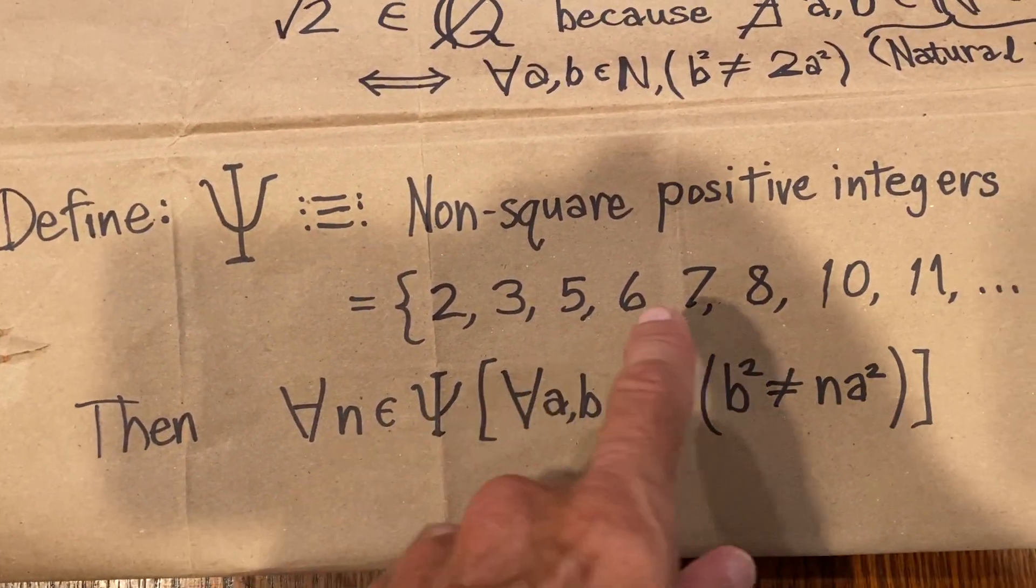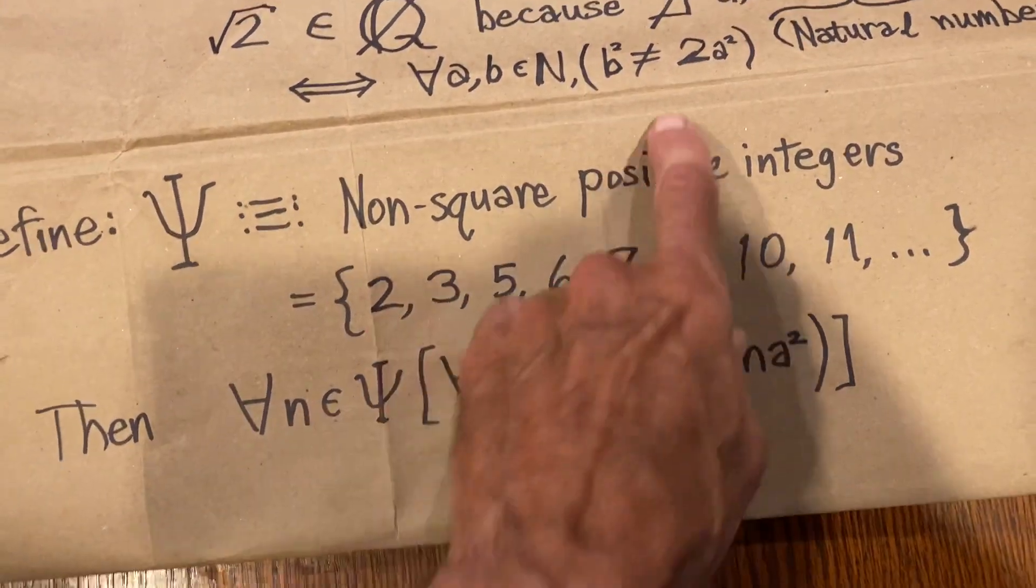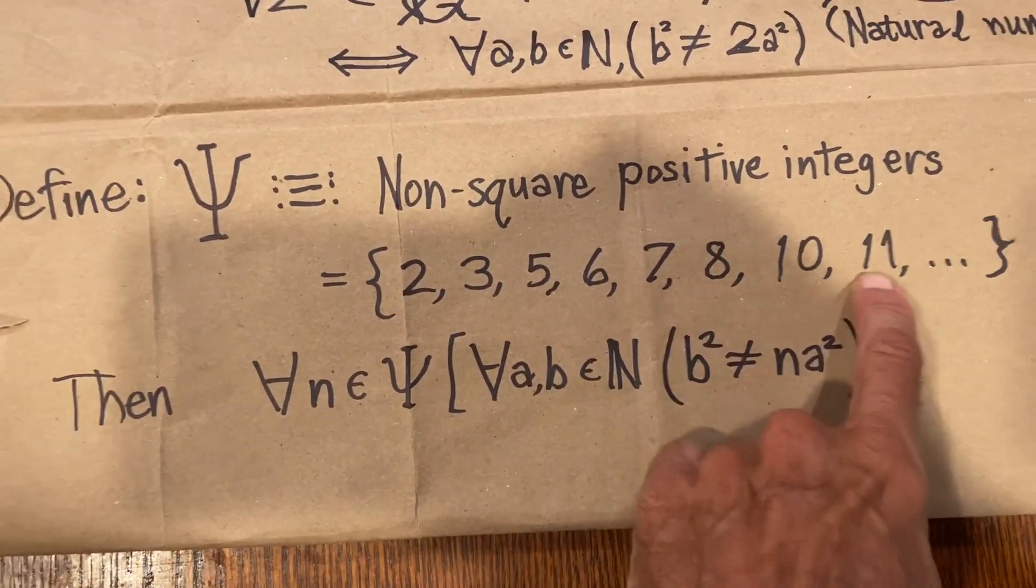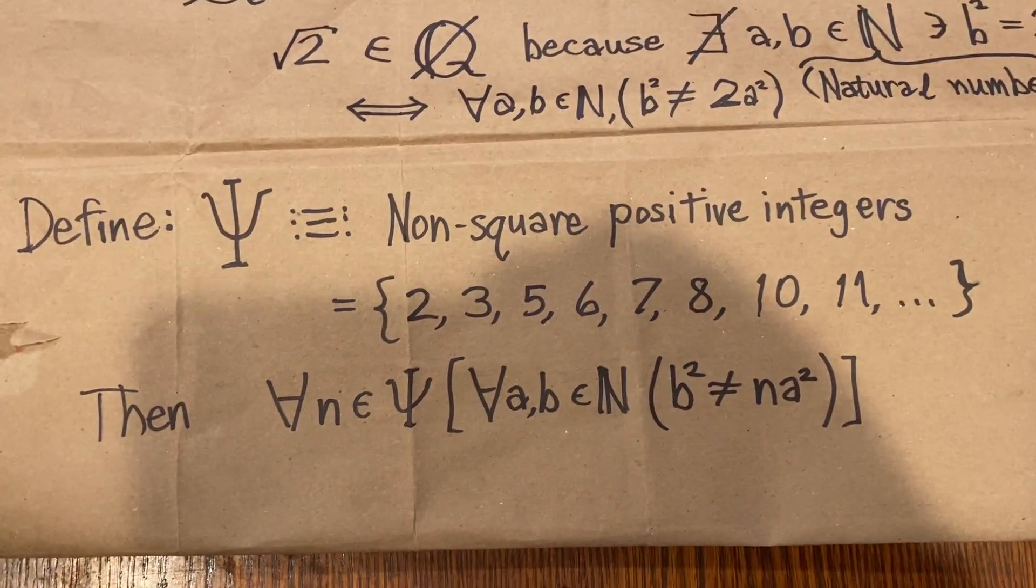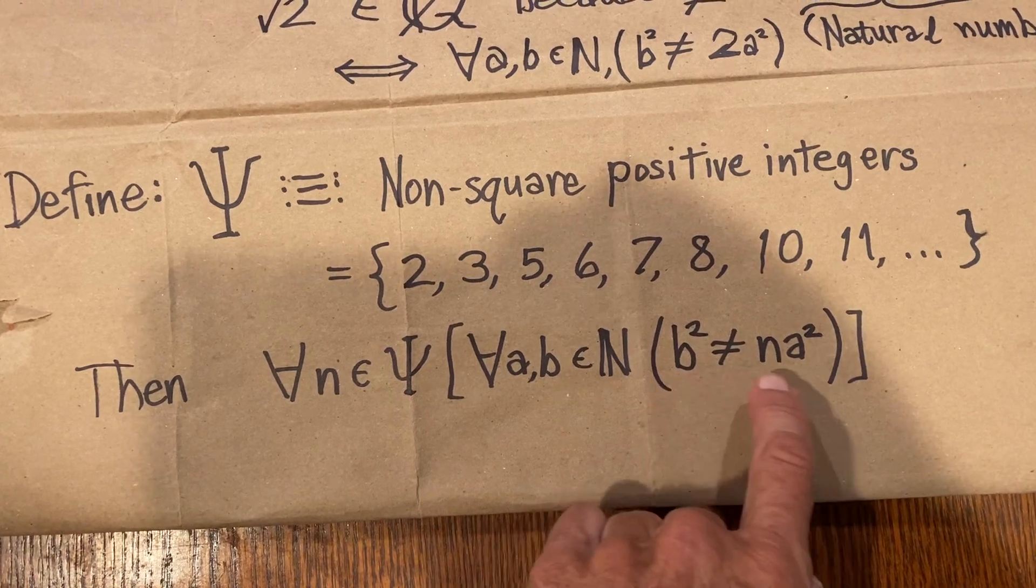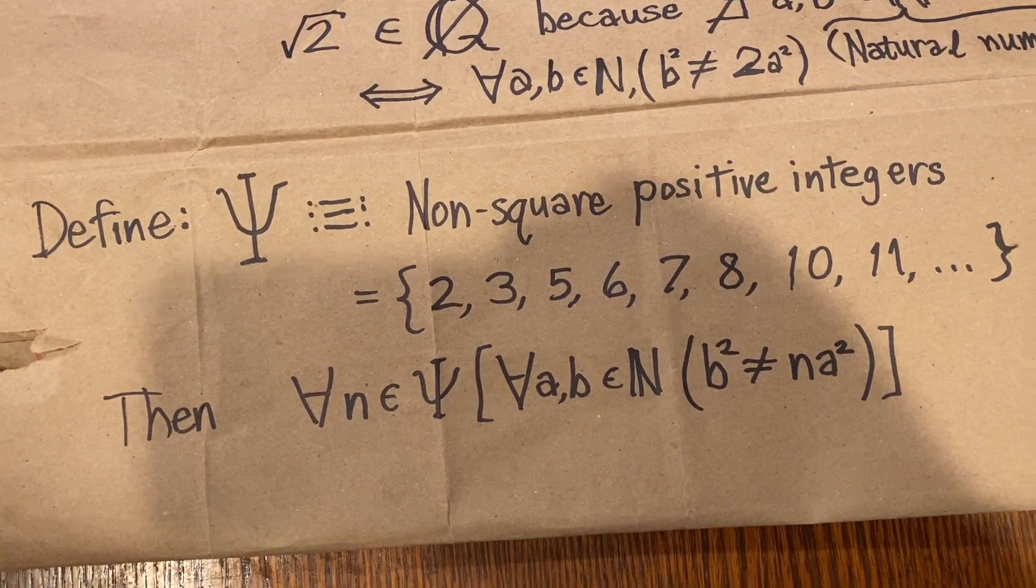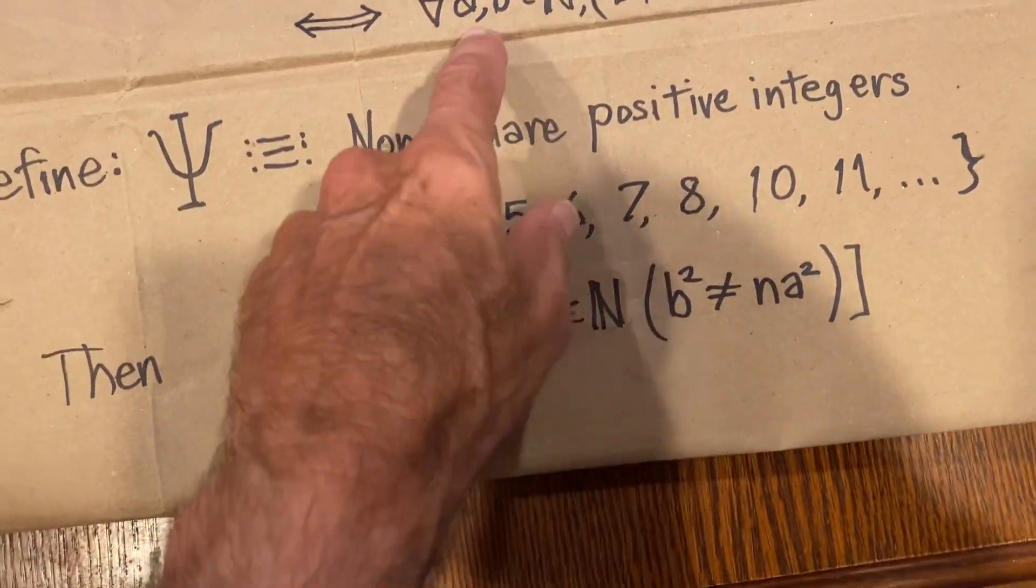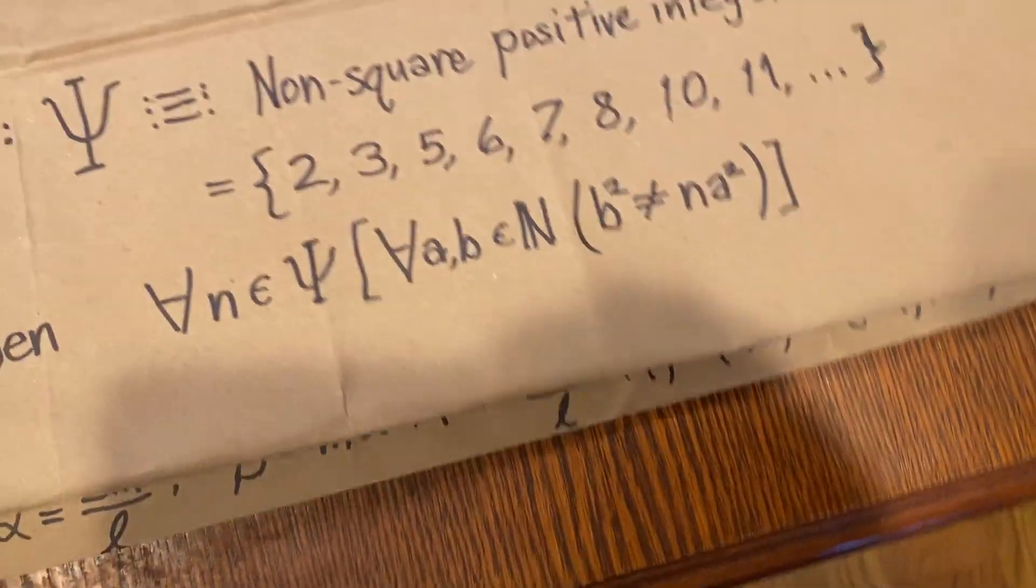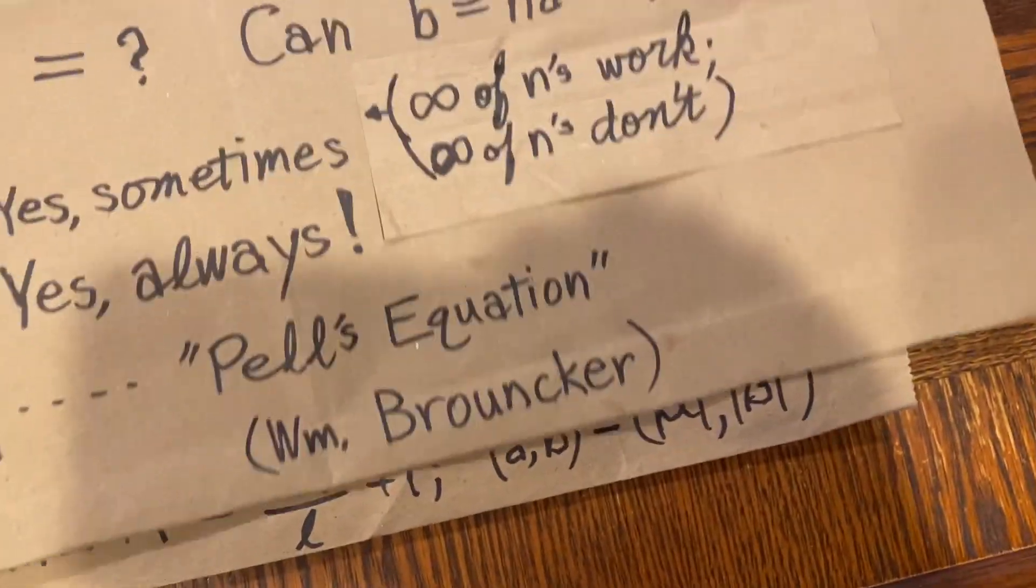And for this, it turns out that every member of this set, you'll note 2 is the first member of this set, and we know that square root of 2 is irrational. Square root of any number in this set is irrational because, similarly to the case for 2, no square can be n times another square if n is in this set. That can be proven similarly to the way Euclid proved square root of 2 irrational. It's a little more complicated, but not terribly, but that's not something I'm covering here today.